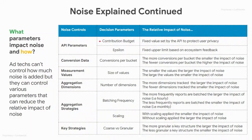Now that we have an understanding of how noise is generated and how it impacts summary reports, we can look at various parameters that can change the relative impact of noise. All of these are parameters that an ad tech can make design decisions around to change their signal-to-noise ratios. We'll go through each of these parameters in a little more detail, and we will also see how we can experiment with them quickly in noise lab in the next section.